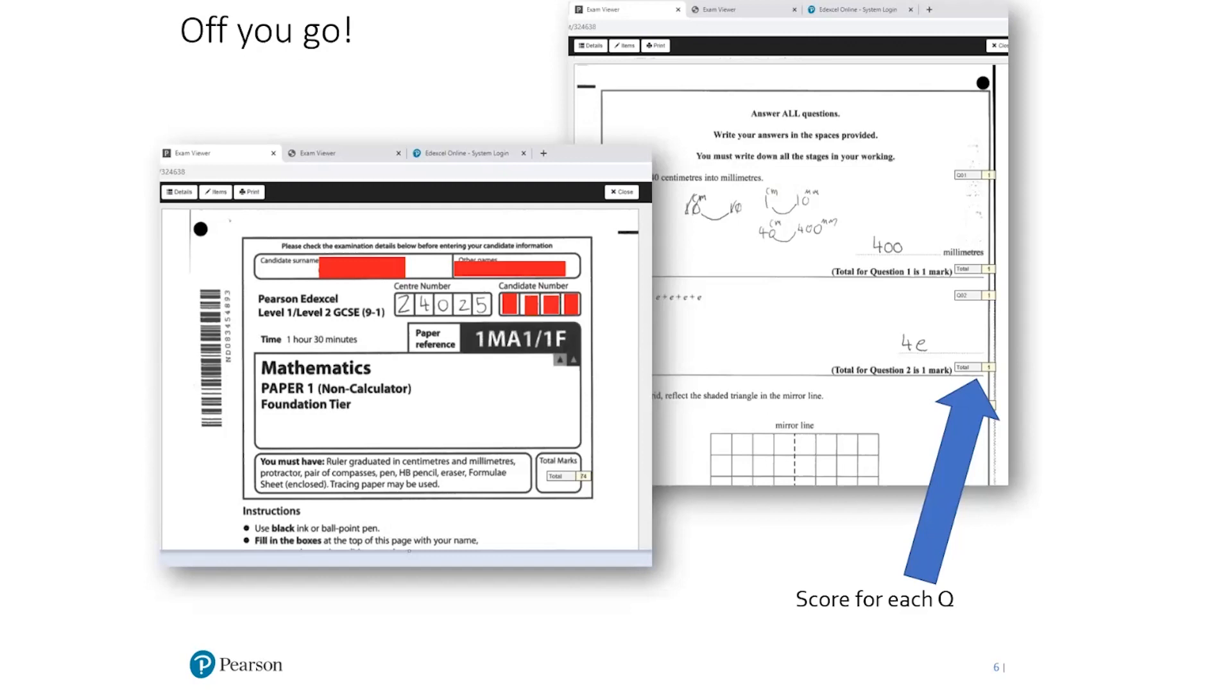And then this is what you get to see. So the front cover all the way through, but with the annotated stamp of how many marks that question was awarded. And you can see that with the big blue arrow on the right hand side there. Yeah, I found it valuable in terms of remarks and reviews, but also some of the questions that you think they're going to nail because you think the whole class has got that. And then you look and there's still those common misconceptions being brought up time and time and time again.